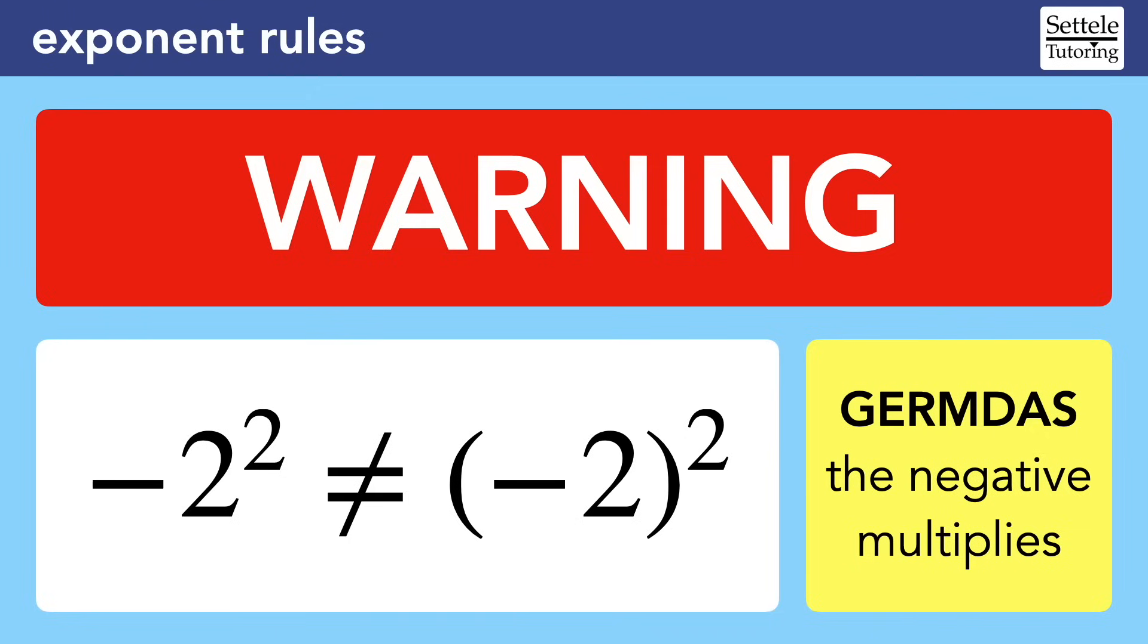Before we get into the rules for negatives, let's remember that calculators are very picky about how you use negatives with exponents. If you want to attach an exponent to a negative base, you need to put the negative into parentheses. Your calculator, including Desmos, will not treat these two situations the same way. When the negative is not in parentheses, the calculator follows the order of operations, which I abbreviate as GERMDAS.